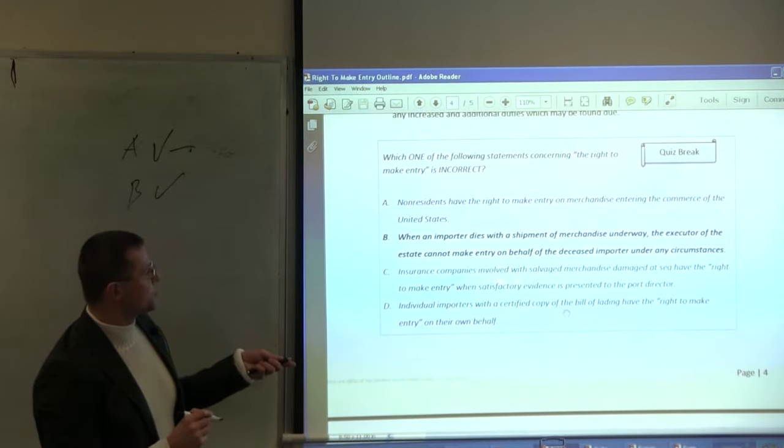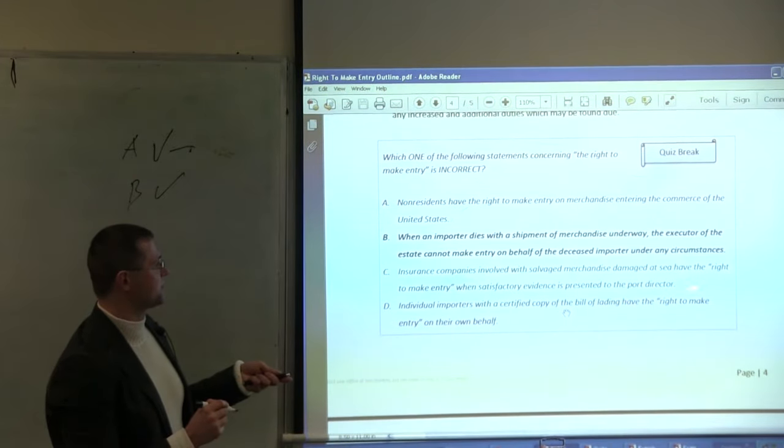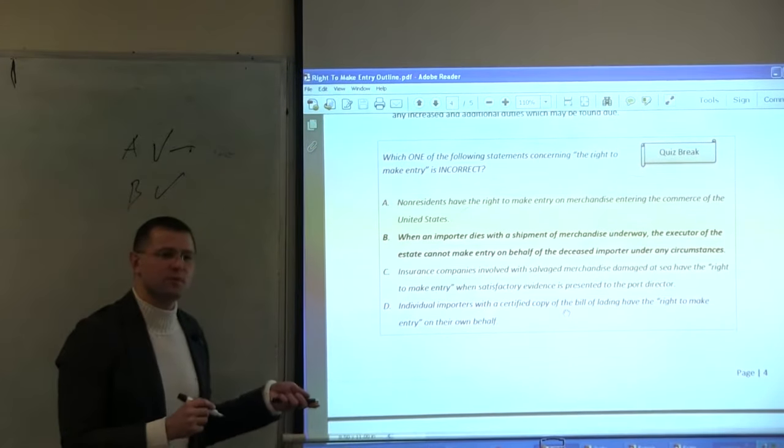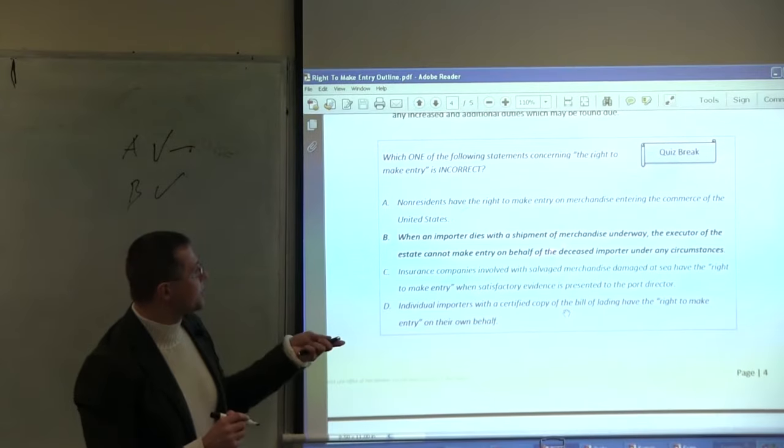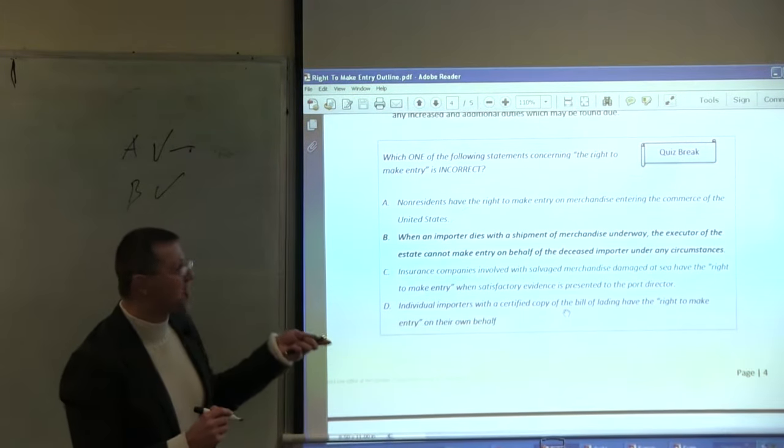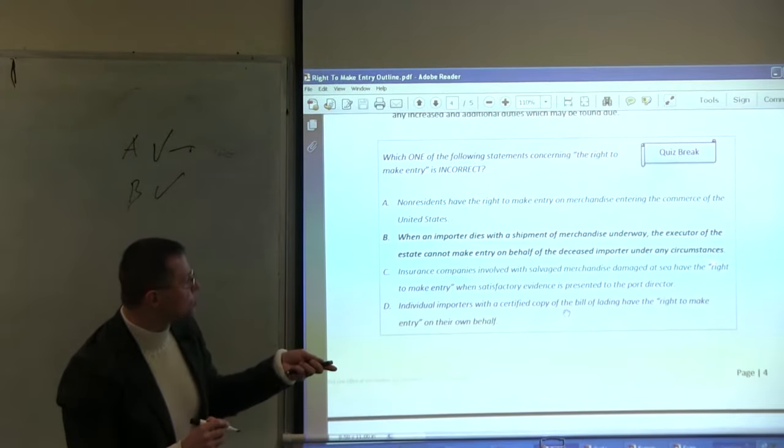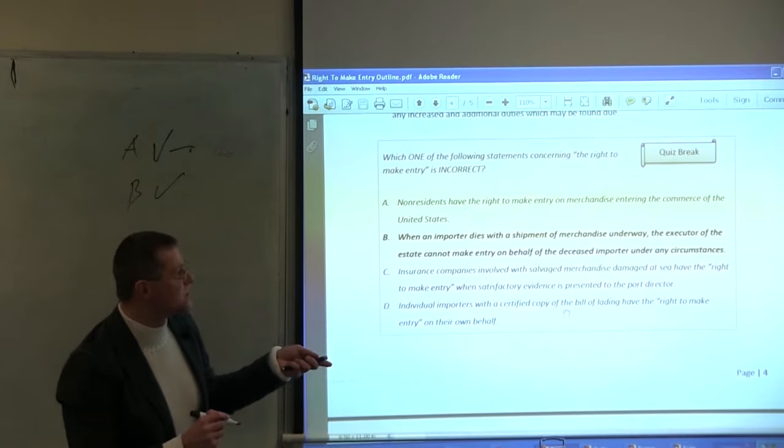C: Insurance companies involved with salvaged merchandise damaged at sea have the right to make an entry when satisfactory evidence is presented to the port director. So if you find this, we go from the trust and estate law, we go to the admiralty law. Who has an ownership in damaged at sea goods?